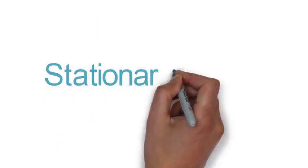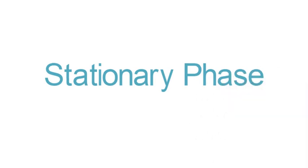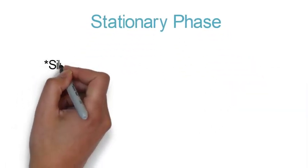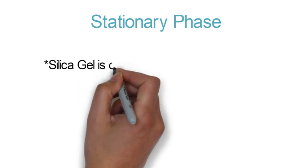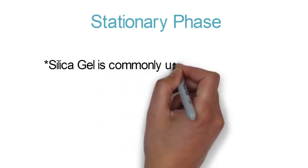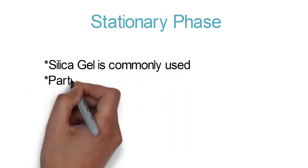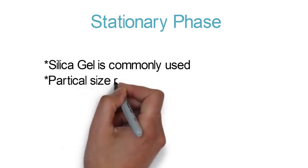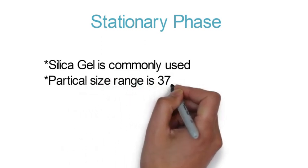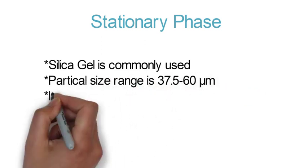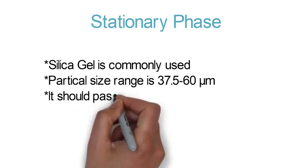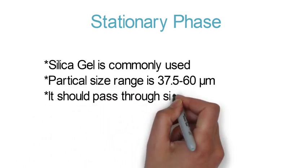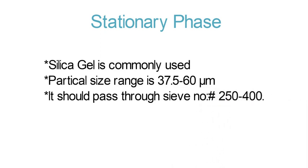Now coming towards the next part, that is stationary phase. Silica is commonly used in flash chromatography as it is used in column chromatography. But the difference is that particle size range is around 37 to 260 micrometer, and it should pass through the sieve number 250 to 400.